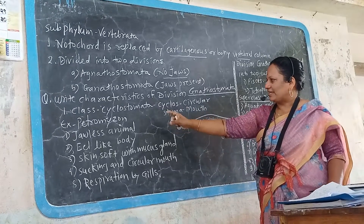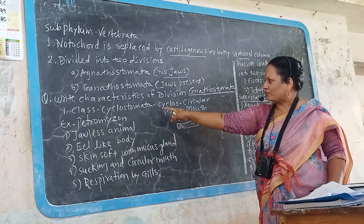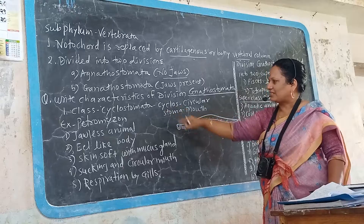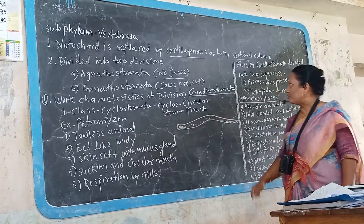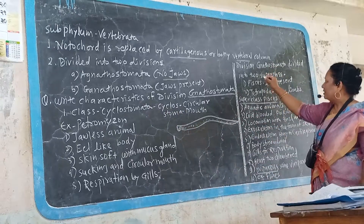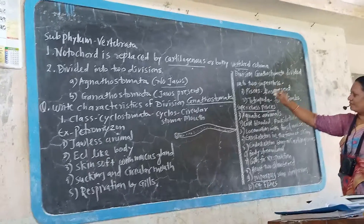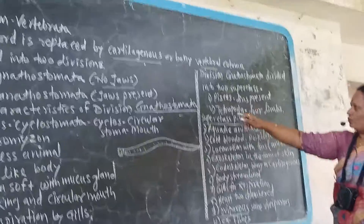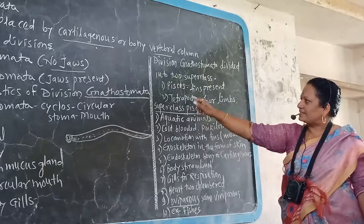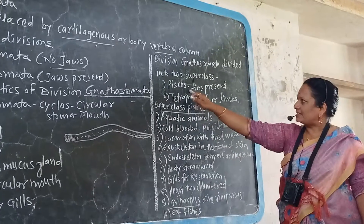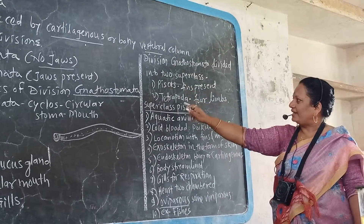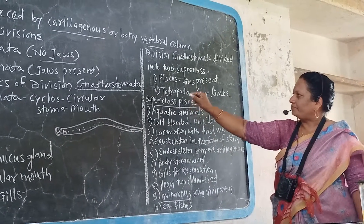Petromyzon is the example of class Cyclostomata. Division Gnathostomata is further divided into two parts: Pisces and Tetrapoda. Pisces includes all fishes, while Tetrapoda have four limbs.